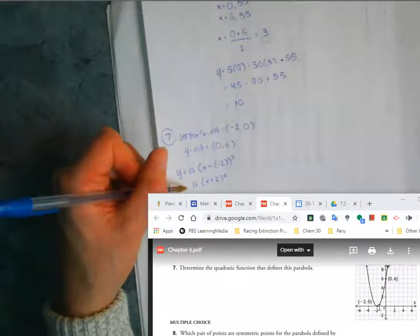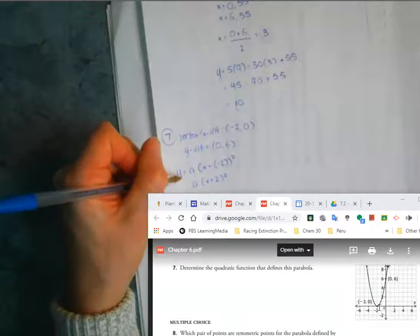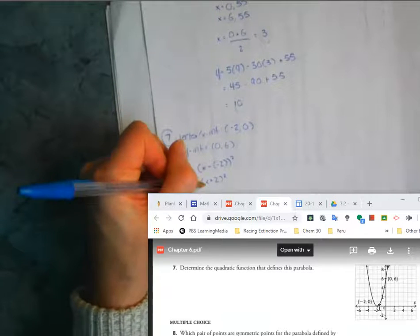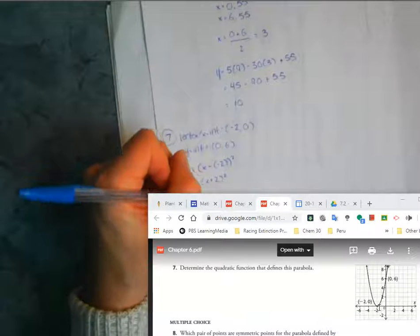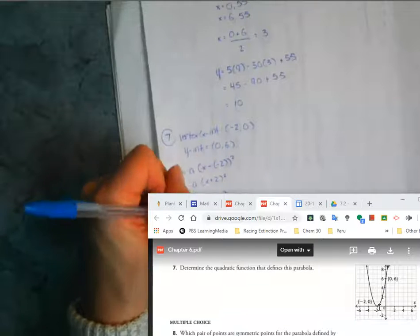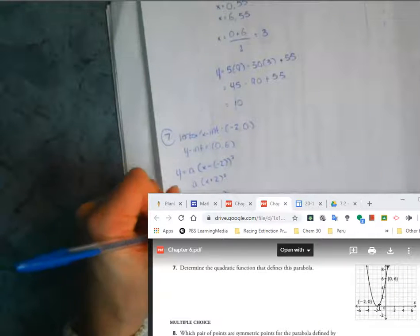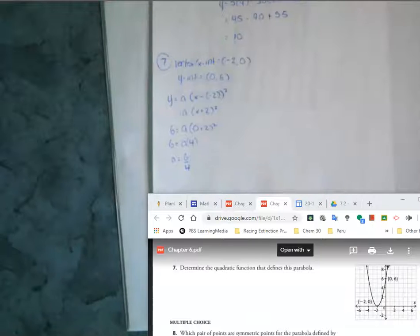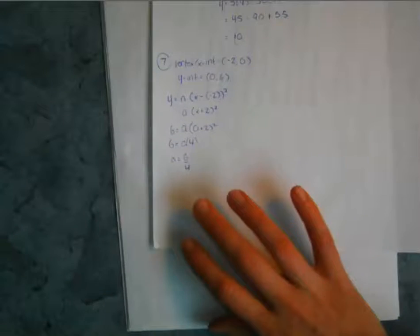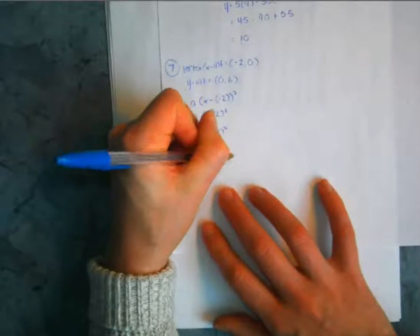Now we can input the y-intercept to solve for a. So y equals 6, equals a times (0 plus 2) squared. That gives 6 equals a times 4. Dividing both sides by 4, a equals 6 over 4, which is 3 over 2, or 1.5 as a decimal.